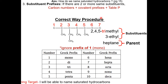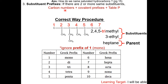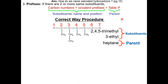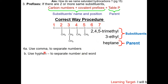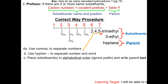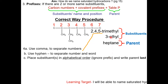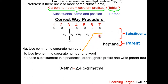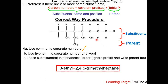Heptane represents the parent chain. Here is the setup for writing out the name: carbon numbers and covalent prefixes are used for substituents' name and position, and table P is used for the parent chain. In step 4, use a comma to separate the numbers and a hyphen to separate the number and the word. Place substituents in alphabetical order, ignoring the prefix, and write the parent chain last. E comes before M, so we write 3-ethyl first, then 2,4,5-trimethyl, and last is heptane. So the chemical name of this molecule is 3-ethyl-2,4,5-trimethylheptane.